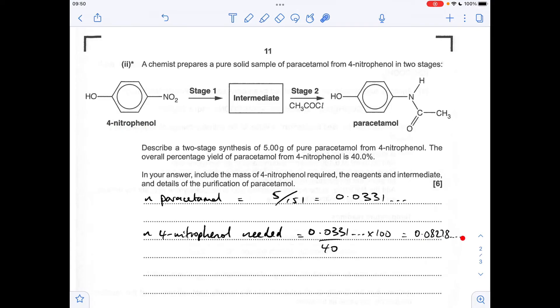So that gives us this many moles and to turn it into grams, we multiply by the MR of 4-nitrophenol, which is 139, which comes out at 11.5 grams.